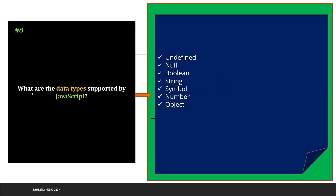The next question says: what are the data types supported by JavaScript? These are some basic terms you need to know. The data types are: undefined, null, boolean, string, symbol, number, and object. So these are the data types which are supported by JavaScript.